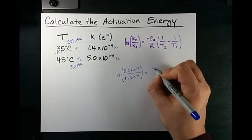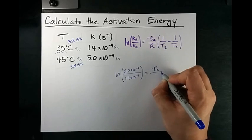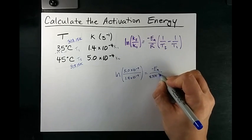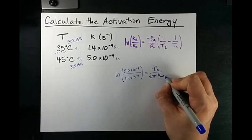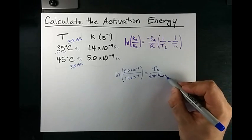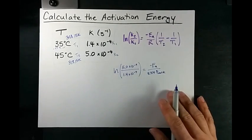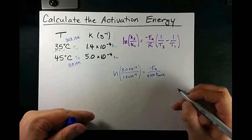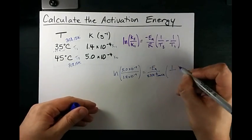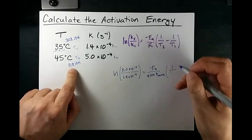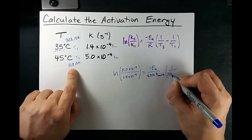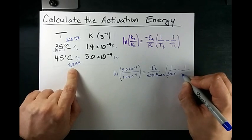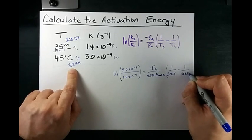is the negative activation energy over R. Now R is 8.314 joules per mole Kelvin. The Kelvin is going to cancel out with this term and my activation energy is going to be left in units of joules per mole. 1 over T2, which is 1 over 318.15 minus 1 over 308.15.